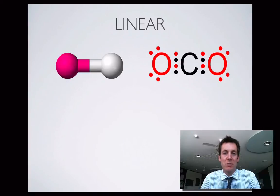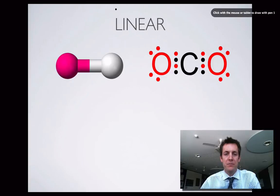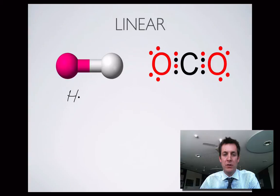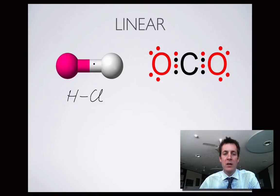We'll start off by looking at the simplest shape of molecule, and this is called a linear molecule. If you've got two atoms bonded together with a covalent bond, there really is no choice — they have to form a straight line because two points are always going to lie on a straight line. So any molecule like HCl will be linear.